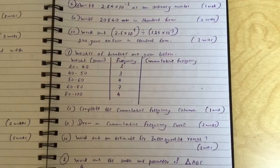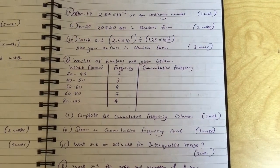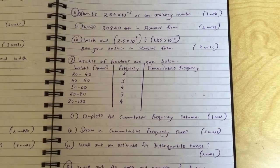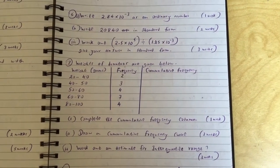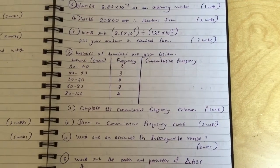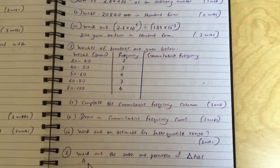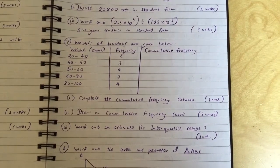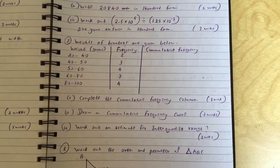Question 7: Weights of tomatoes are given below: 20 to 40 there were 2, 40 to 50 there were 3, 50 to 60 there were 4, 60 to 80 there were 7, 80 to 100 there were 4. Part 1: Complete the cumulative frequency column. Part 2: Draw a cumulative frequency curve. Part 3: Work out an estimate for interquartile range.